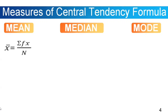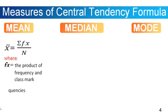For our mean, the formula is: x̄ is equal to the summation of fx all over n, where fx is the product of frequency and class mark, and n is the total frequencies.